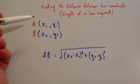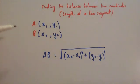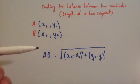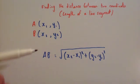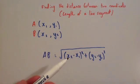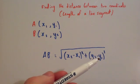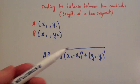If you've got a coordinate A, which is x1, y1, and a coordinate B, which is x2, y2, then the distance between A and B, or the length of the line AB, would be found by x2 minus x1 squared plus y2 minus y1 squared, and then you'd square root it.